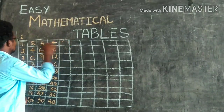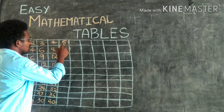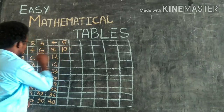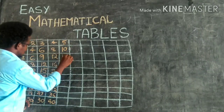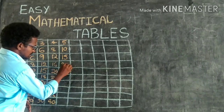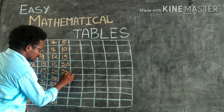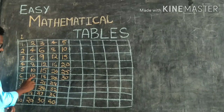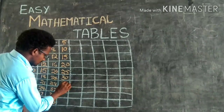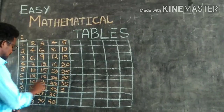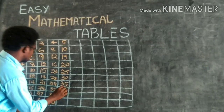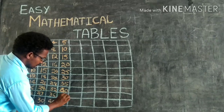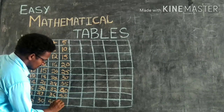Then next, coming to the 5th table. 1st, 2nd, 3rd, 4th, 5th — coming to 5th. Then: 6, 7, 8, 9, 10, 11, 12, 13, 14, 15, 16, 17, 18, 19, 20, 21, 22, 23, 24, 25, 26, 27, 28, 29, 30, 31, 32, 33, 34, 35, 36, 37, 38, 39, 40, 41, 42, 43, 44, 45, 46, 47, 48, 49, 50.